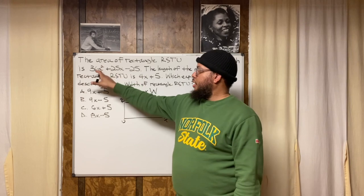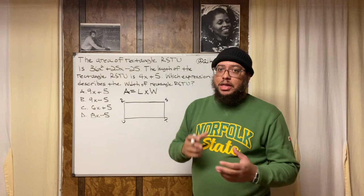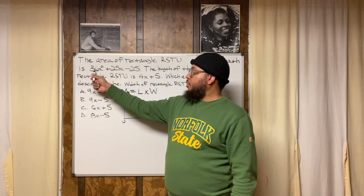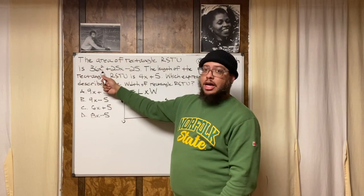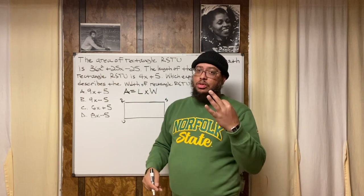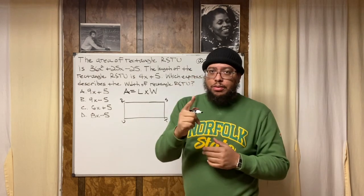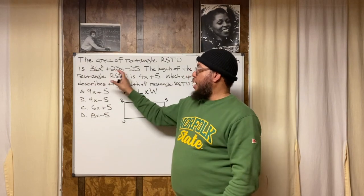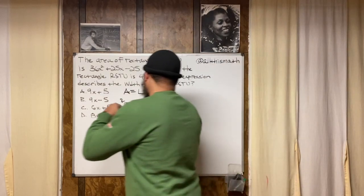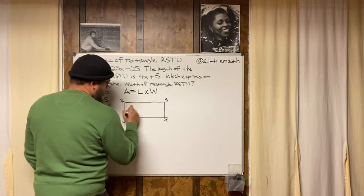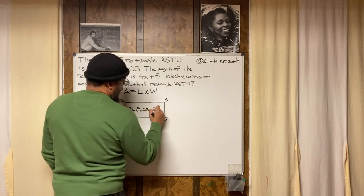Terms are separated by plus or minus signs. 36x² is one term — technically 36 times x times x, but they're combined by multiplication so they count as one term. 25x is one term, and negative 25 is one term. So I'll write the area inside the rectangle: 36x² + 25x − 25.